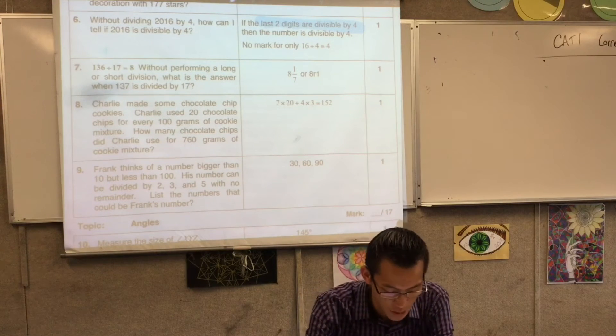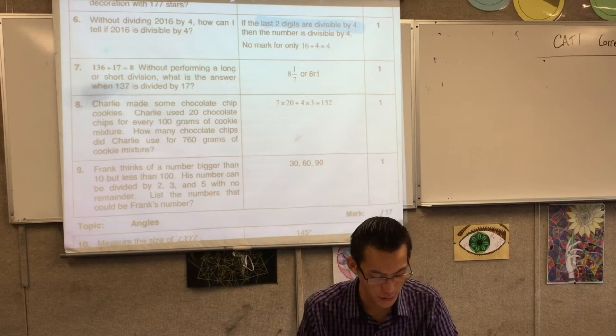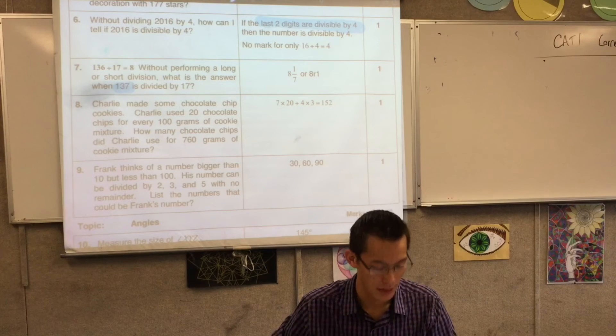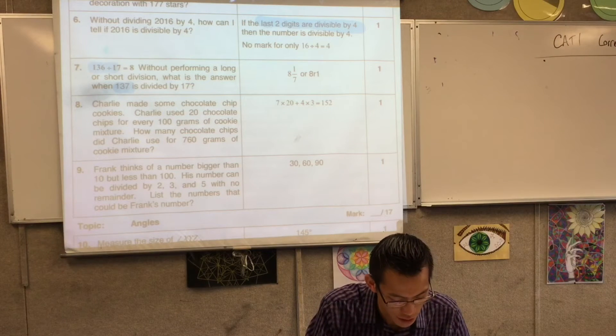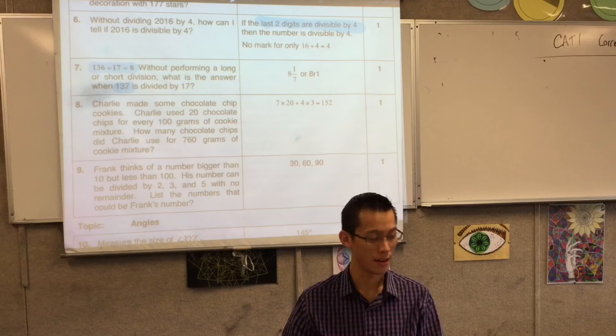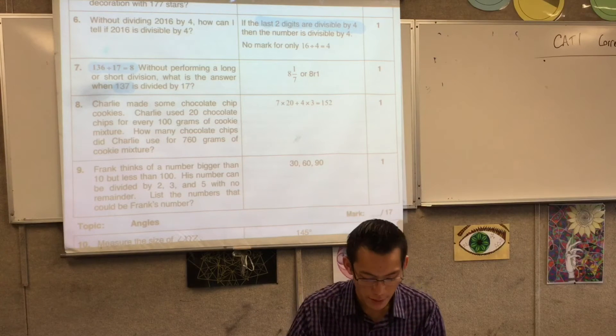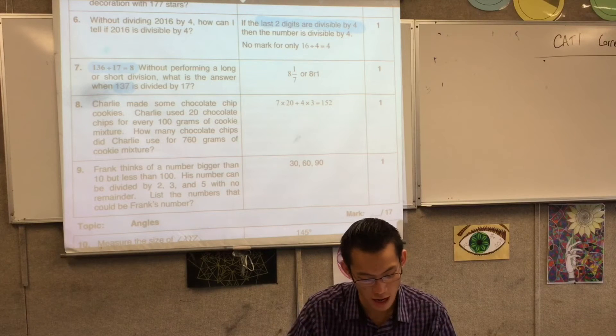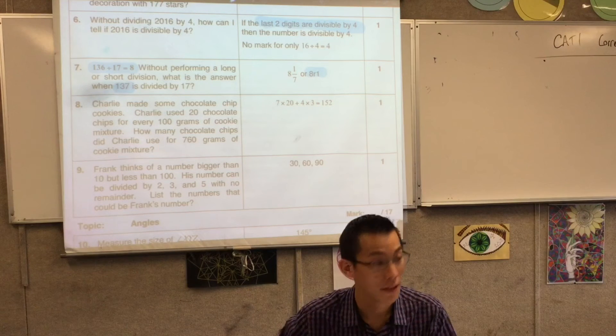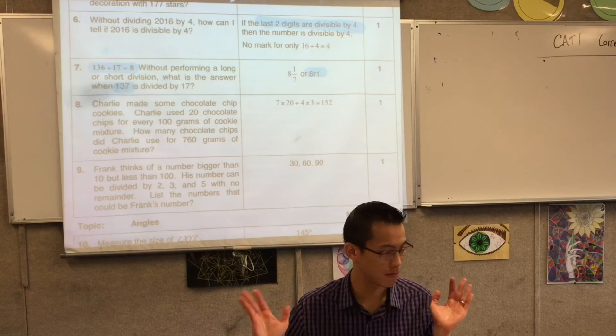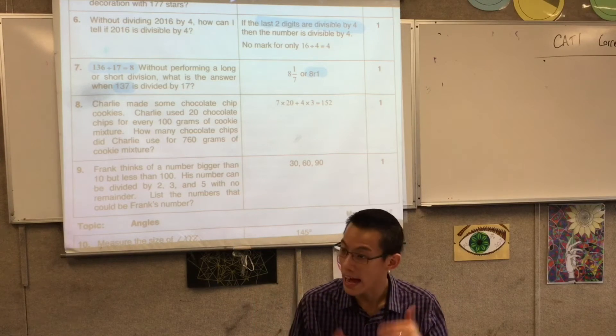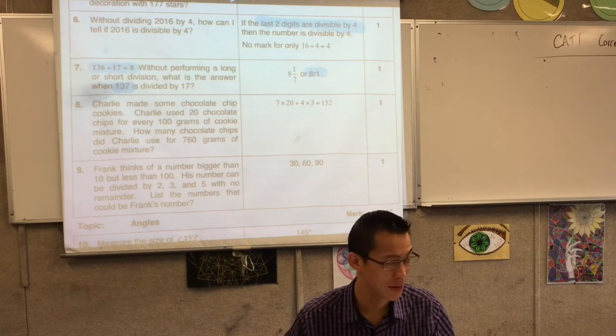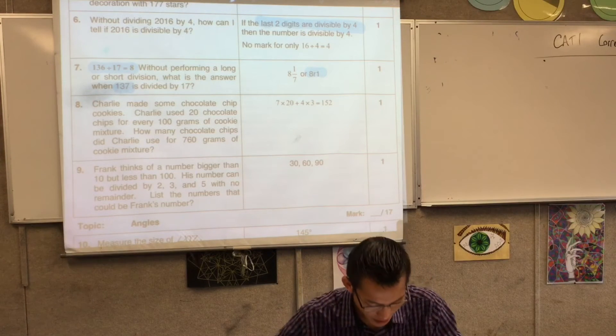A similar answer without performing a long or short division. What's the answer when 137 is divided by 17, if this is what happens when 136 is divided by 17? So you could have given your answer in either of these forms. I would have naturally have gone to this one because I got exactly eight when I divide 136. If I add one more on, I get a remainder of one. But you could have written it as a fraction and that was accepted as well.